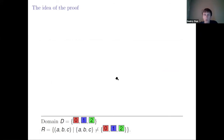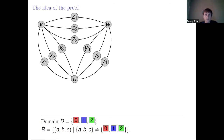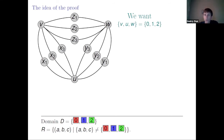Now about the proof. I tried to generalize my proof for the disjunction of equalities. This time we have three elements and so we need three variables V, U, and W. My plan was to build an instance such that in any surjective solution, V, U, and W are all different — they take all elements zero, one, two from the domain. That is what we want to achieve.